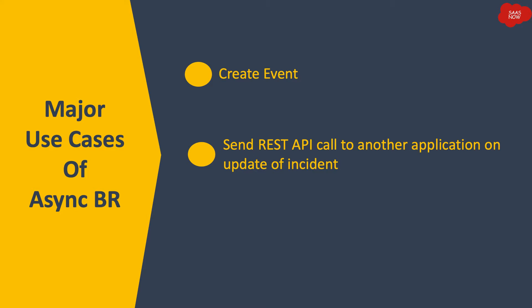Another use case is sending a REST API call to another application on update of an incident. If you want to create a record in another system when you update the current incident — maybe you change the state or some fields — you should use an async business rule, because you don't have to get the data right away. The system will process the request, make the call to the other system, create the record there, and maybe update the record in your system after getting the response.